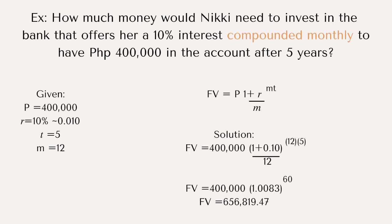Next example: How much money will Nikki need to invest in a bank that offers 10% interest compounded monthly to have 400,000 in the account after 5 years? Given: FV is 400,000, rate is 0.10, time is 5, and M is 12. The formula is FV equals P times (1 plus R divided by M) raised to M times T. Solving the parenthesis: 0.10 divided by 12 plus 1 equals 1.0083. Then 12 times 5 equals 60. So 400,000 times 1.0083 raised to 60 equals 656,819.47.